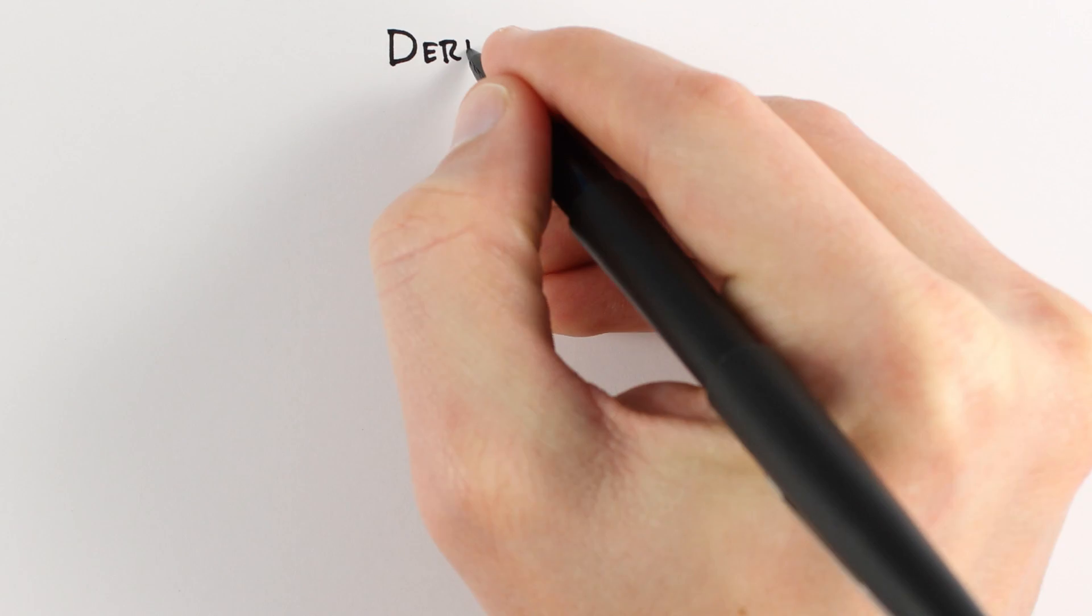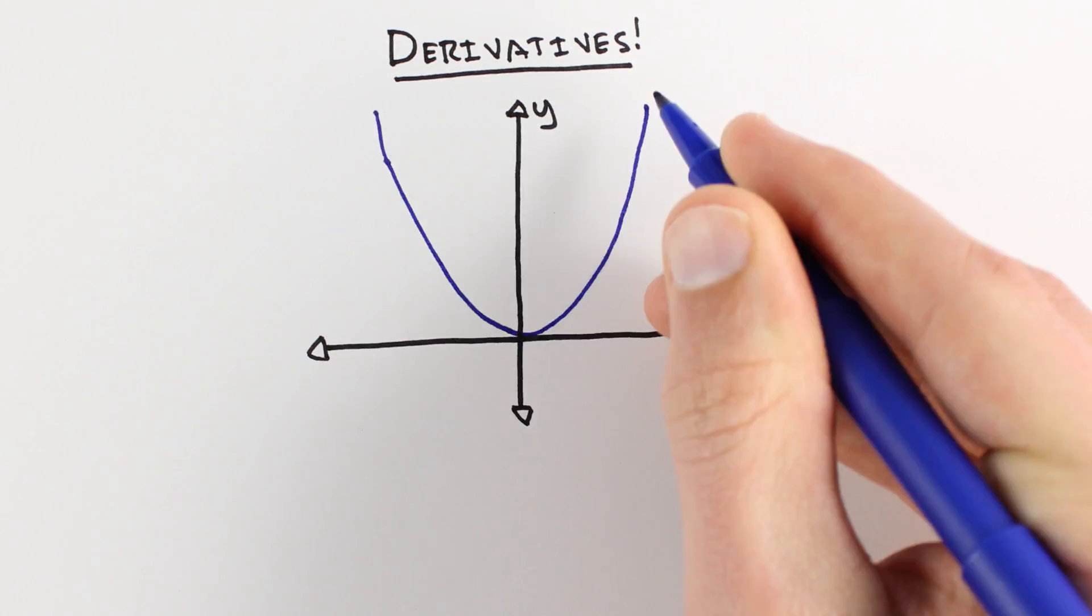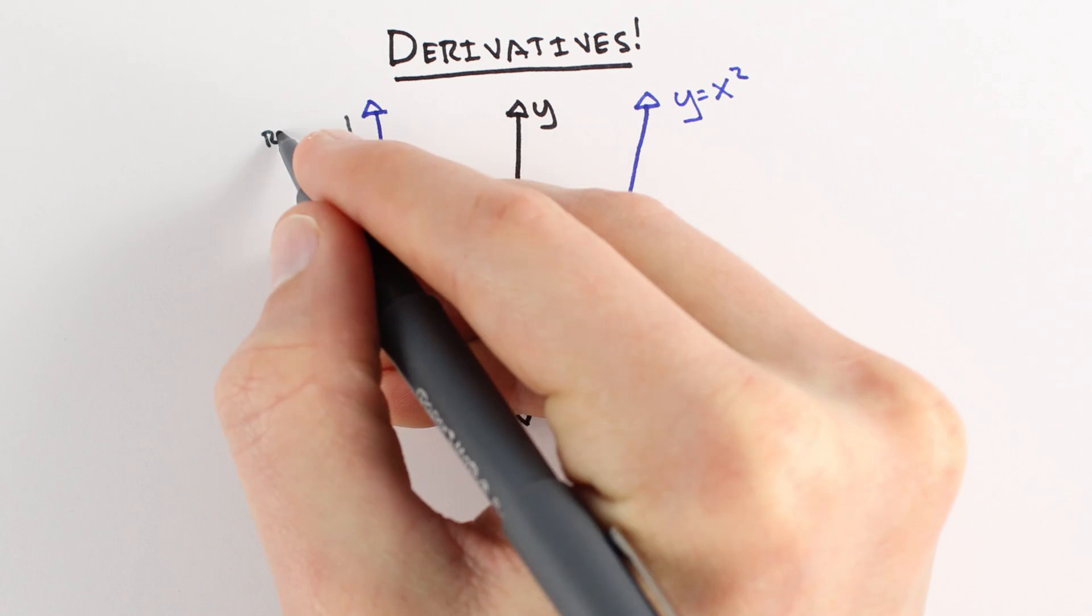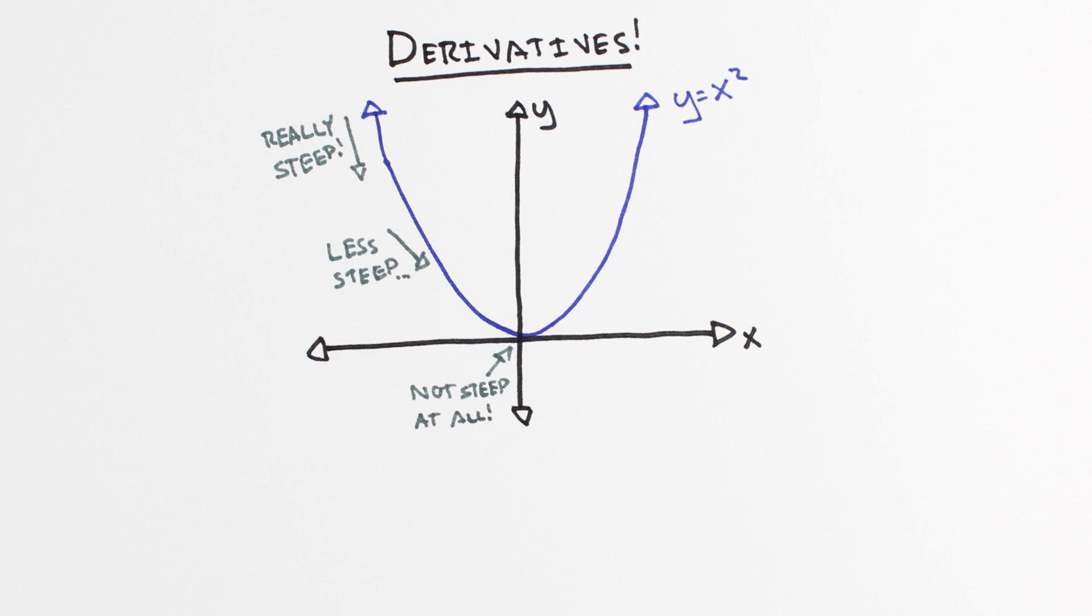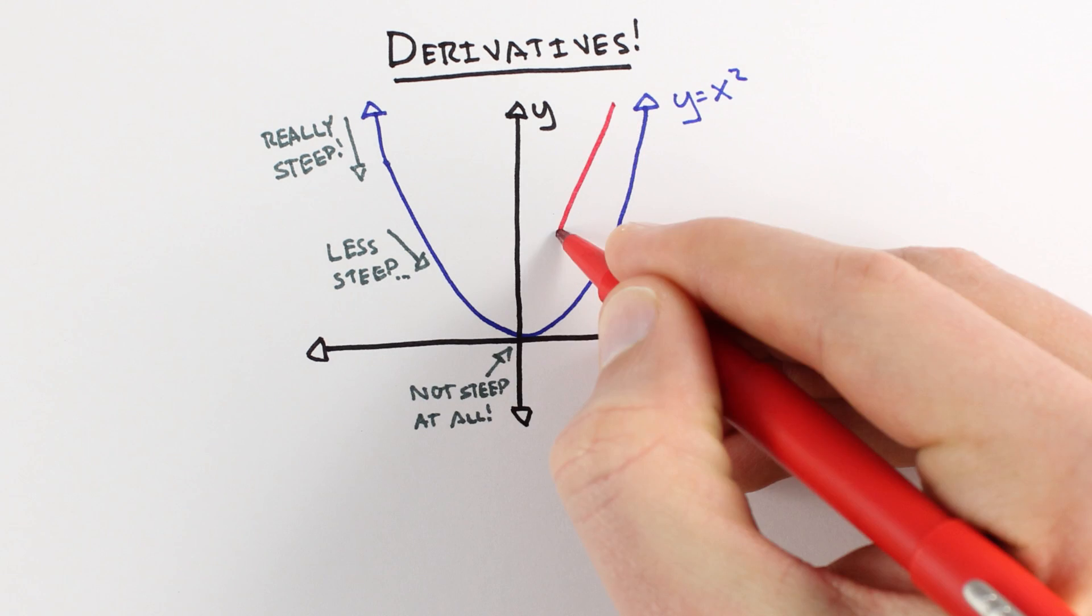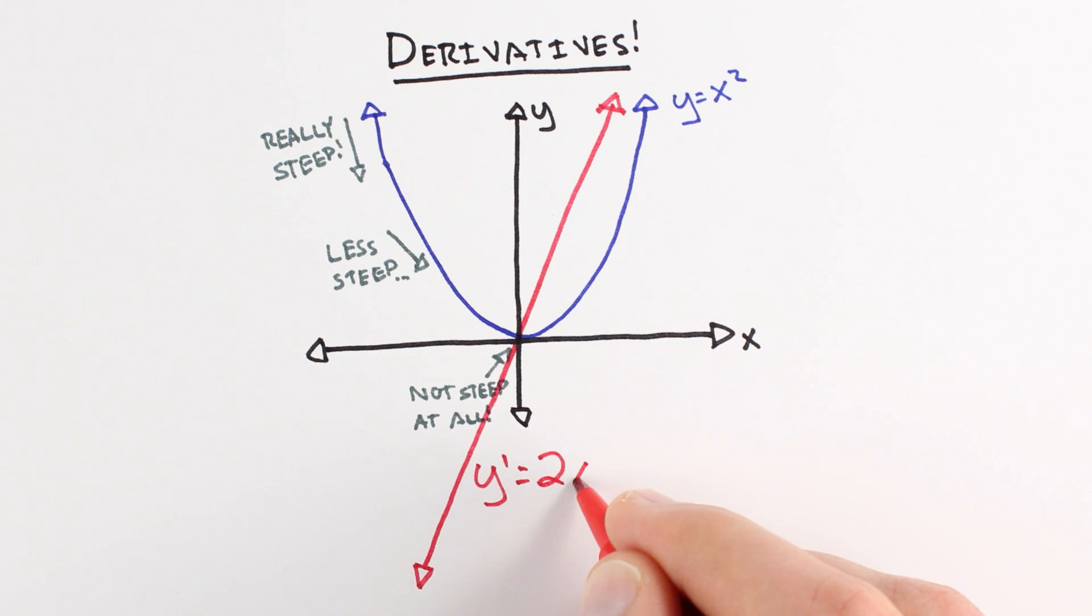To get started, let's quickly review derivatives. Derivatives tell us the slope or how steep a function is. Once you're familiar with calculus, it's easy to take for granted the inner workings of the derivative. We just accept that the derivative of x squared is 2x by the power rule.